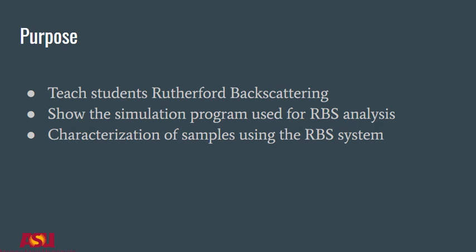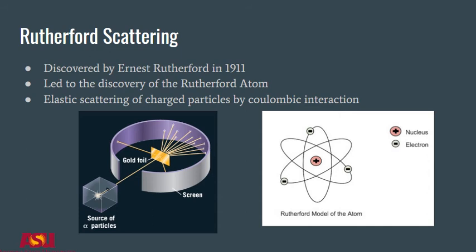Before we get into the principal operations of RBS, it is key to know the history of Rutherford Scattering. Rutherford Scattering was discovered in 1911 by scientist Ernest Rutherford. He shot energetic particles at gold foil expecting these particles to pass straight through due to the plum pudding model of an atom, but found that these particles were scattered instead.